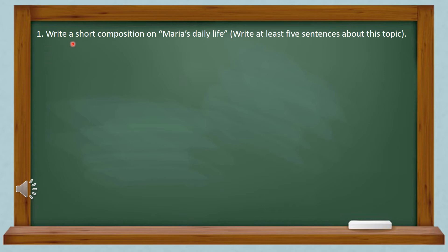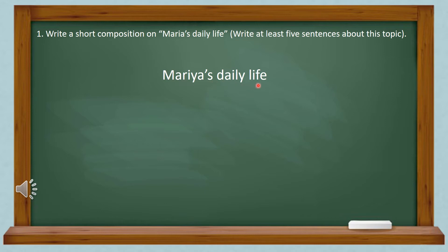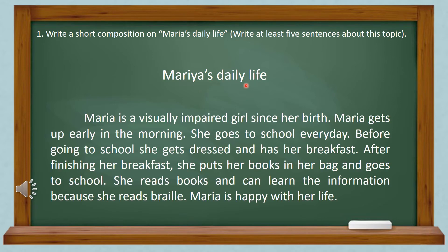Here we can see a question: write a short composition on Maria's daily life — write at least five sentences about this topic. When you are asked to write a short composition, first of all you have to write the topic of the composition. Since this question is about Maria's daily life, you have to write down the topic 'Maria's Daily Life' first. Then you have to write the composition. The first line is: Maria is a visually impaired girl since her birth.